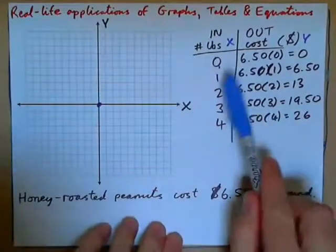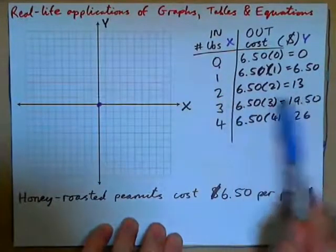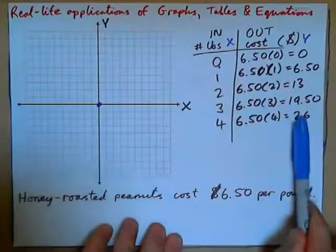Then we've got (1, 6.50), (2, 13), (3, 19.50), (4, 26). So we've got to think about our axes.